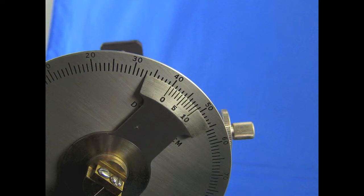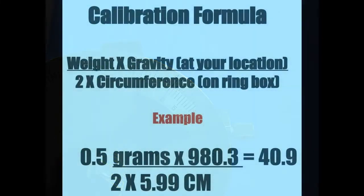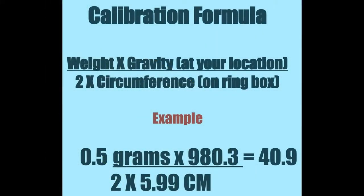Set up to calculate the calibration number. This is the weight put on the ring times the gravity at your location. You can get this from the National Geodetic Survey. This number is divided by two times the ring circumference. The ring circumference is printed on the ring box label.